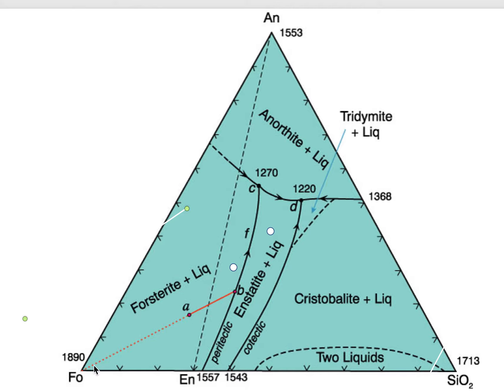As forsterite forms, the liquid will migrate away from forsterite. The actual liquids will follow the solid orange line, moving in this direction until they hit point B.